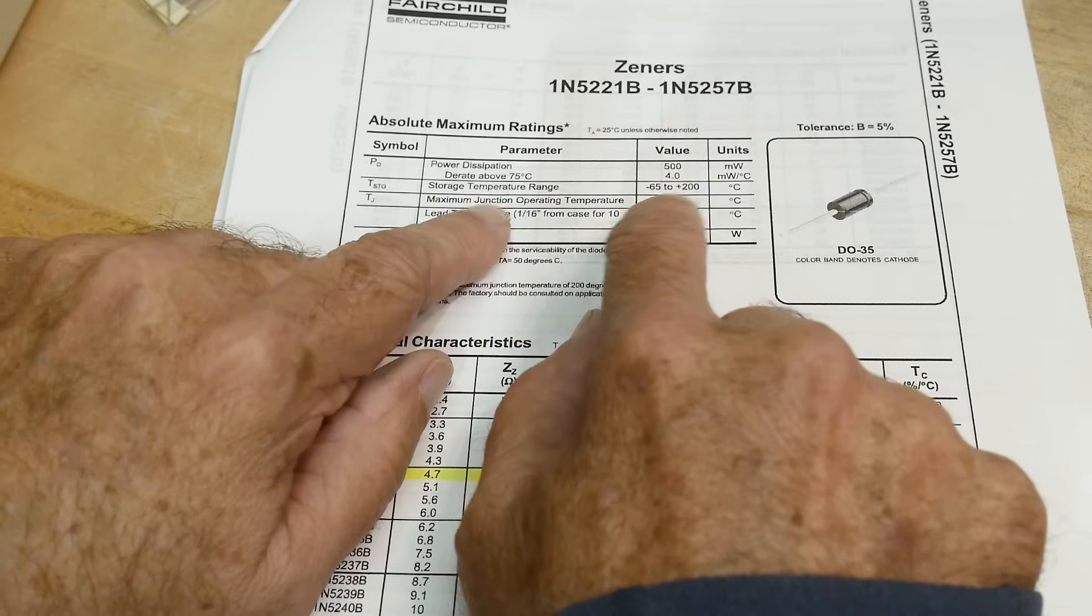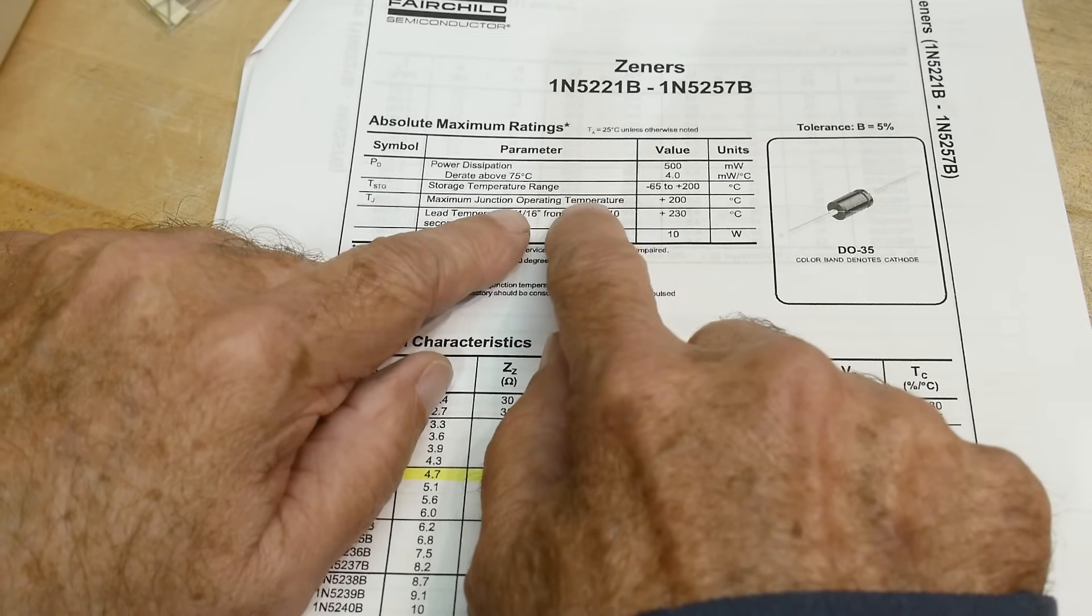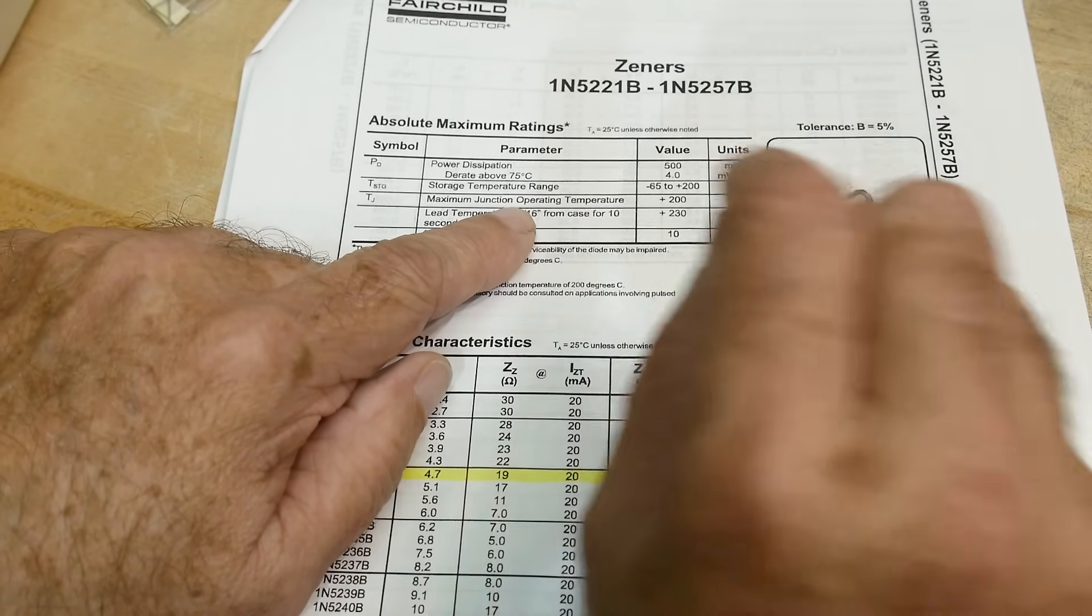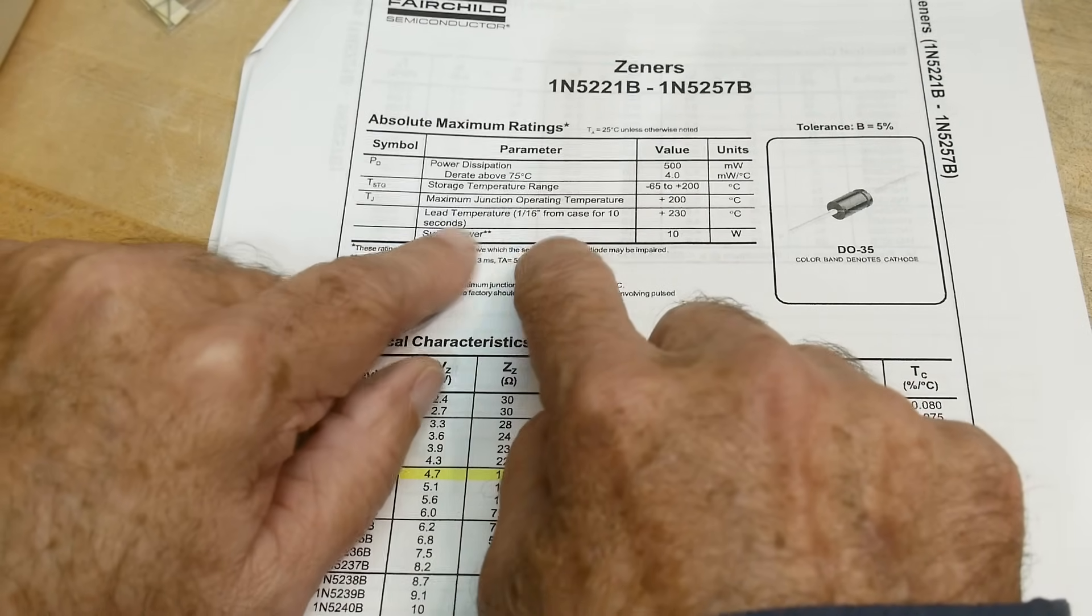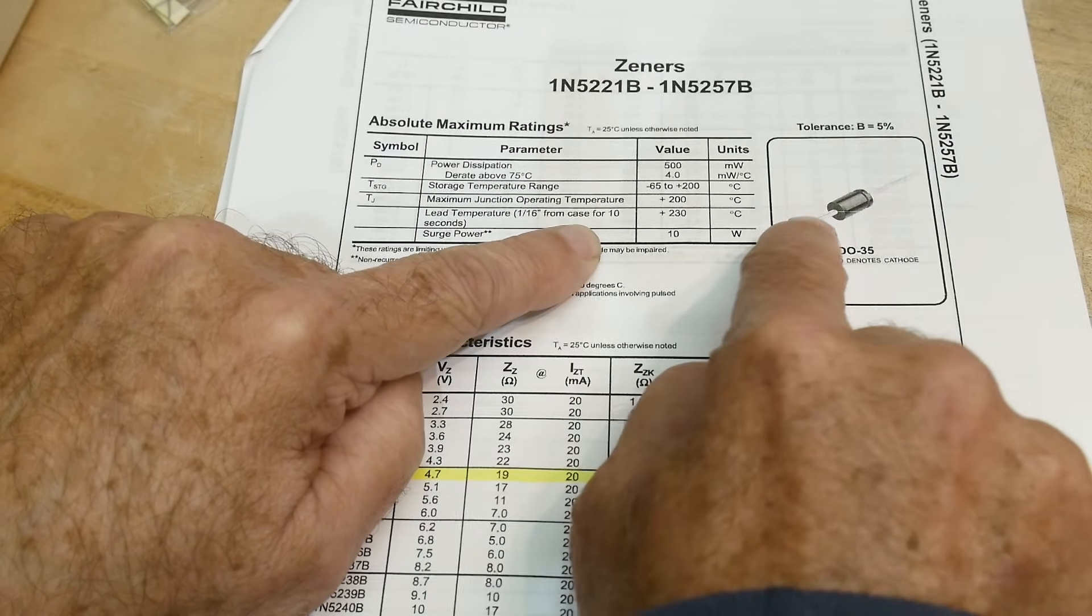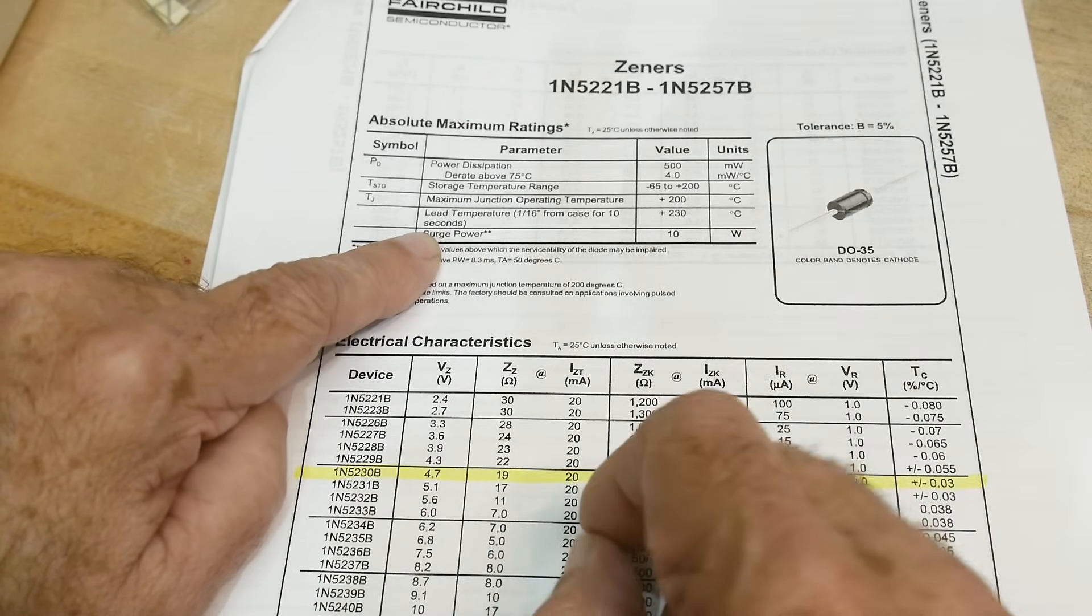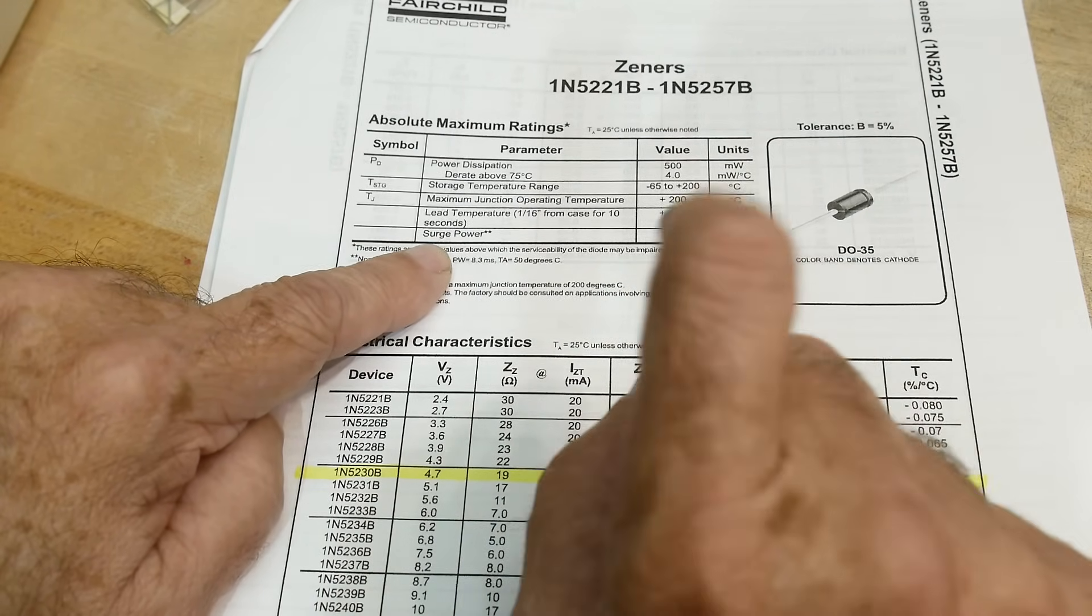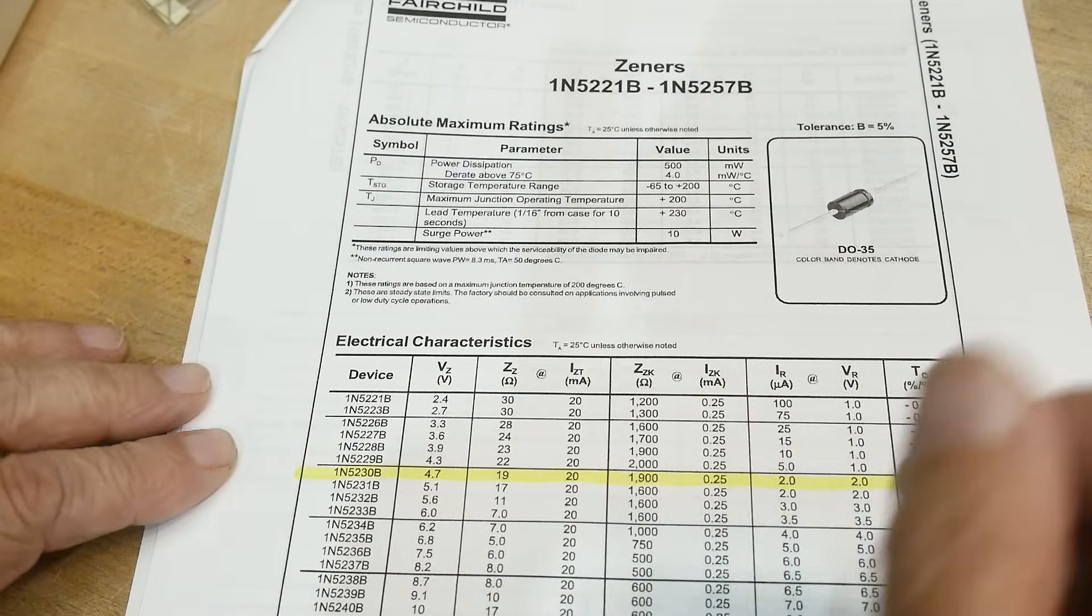Storage temperature, fine. Maximum junction temperature, 200 degrees C. That's the junction temperature. Very hard thing to measure, but right at the die itself, 200 C. The lead temperature is easier to measure. 1/16th inch from the case, out here, for 10 seconds. So you can measure that with your thermal camera. Surge power, 10 watts. So you can pulse these things, but the DC power dissipation is half a watt.